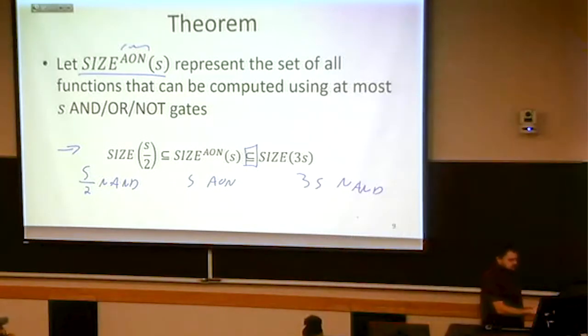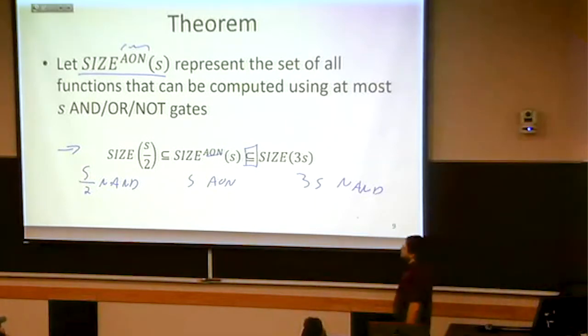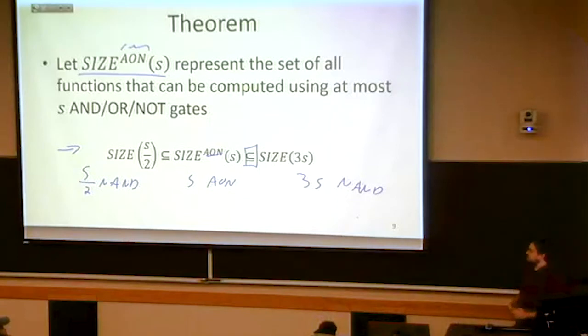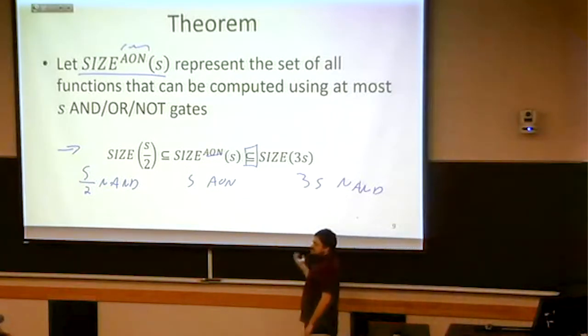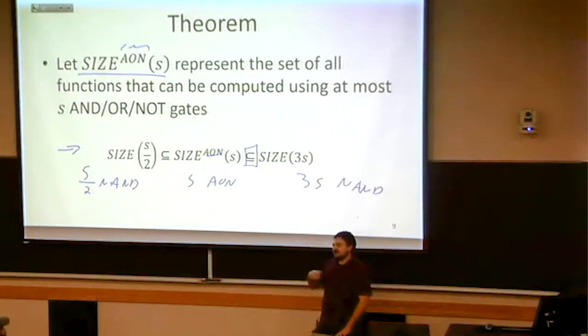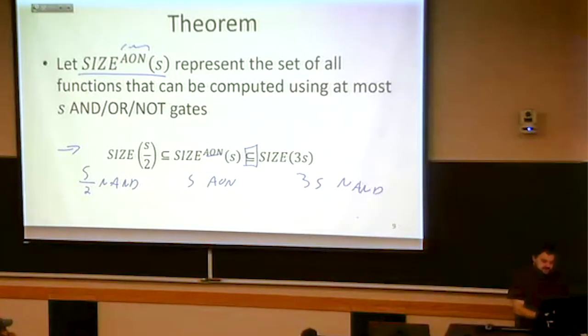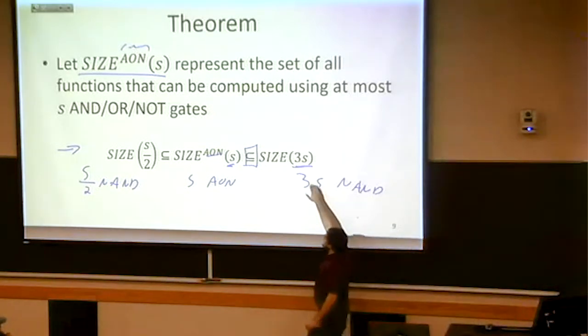So in the worst case, when we're looking at all of the S gates, all of the S AND or NOT gates that we used here, if all of them were, was OR the most expensive one? Yeah. So if we were just so unlucky that all of them were ORs, then when I converted that using that technique to a NAND circuit, then I had a three times explosion in how many gates I had. So that means that certainly anything I could do in S AND or NOT gates, I'd be able to do in three S NAND gates, because that conversion said that I would end up with three times as many gates.